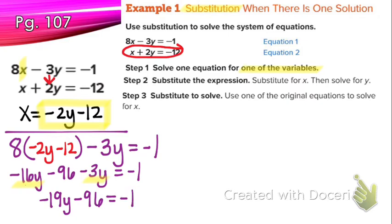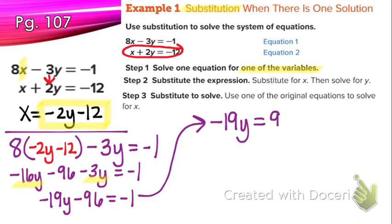Go ahead and try to solve that equation for y. You would add 96 and then divide by negative 19. When we add 96, we get negative 19y equals positive 95. Divide both sides by negative 19. What is 95 divided by negative 19? Negative 5. Any questions about how we got that?